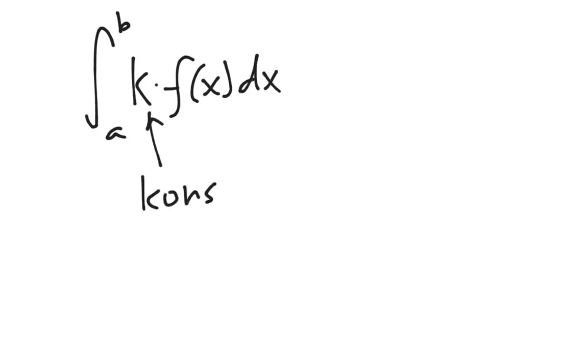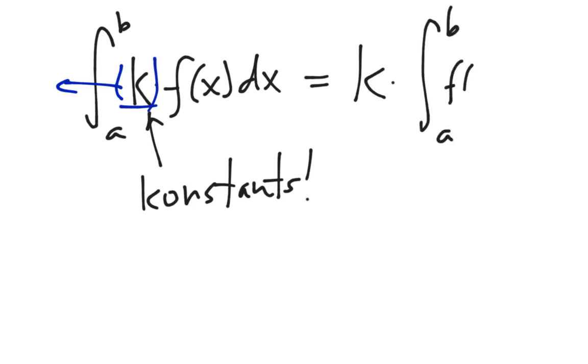The last property is very important. It's our constant multiplier property. So if we have the integral from x equals a to x equals b of k times f of x dx, and here k is a constant. What you can do with that constant is, just like with derivatives, the integral is a semi-permeable membrane for constants, and you can pull the constant out. And the way we would rewrite this is k constant times the integral from a to b of f of x dx. And so you would just find this integral first, and then just multiply it by the constant at the end.